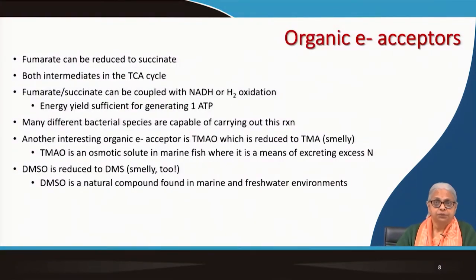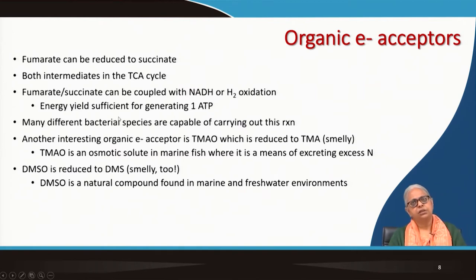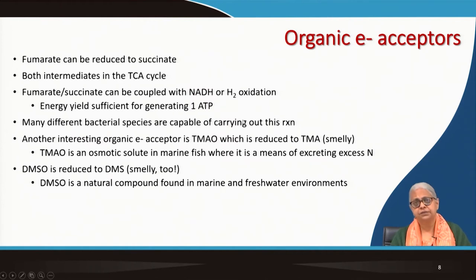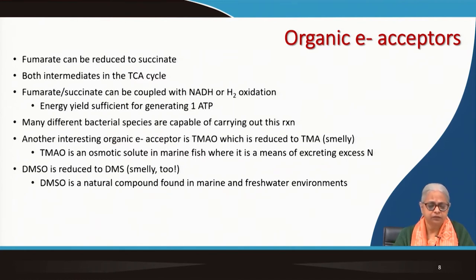Organic electron acceptors include fumarate and others shown in the table previously. Fumarate and succinate are intermediates in the tricarboxylic acid cycle, and the fumarate-succinate conversion can be coupled with NADH or hydrogen oxidation; the energy yield is sufficient for generating 1 ATP. Many different bacterial species are capable of utilizing them, and this is also the basis of fermentation reactions. Other organic electron acceptors include DMSO and TMAO. The fishy smell associated with the seaside is linked to DMSO and DMS, which are natural compounds in marine and freshwater environments.